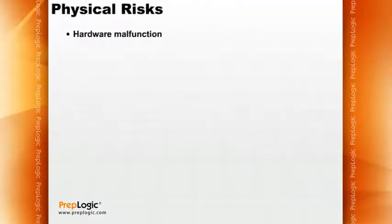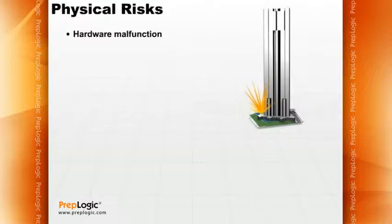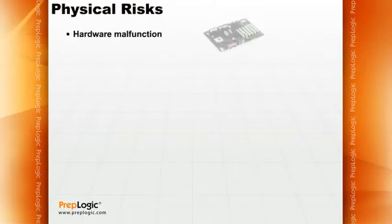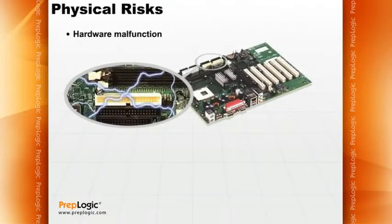Another source of loss is hardware malfunction. What happens if there's a serious electrical fault and the transformer outside your building blows up? Are you prepared to handle that? These are the types of plans you want to always be prepared for. Hardware malfunction could be something as simple as a hard disk controller going bad, which can be pretty significant.